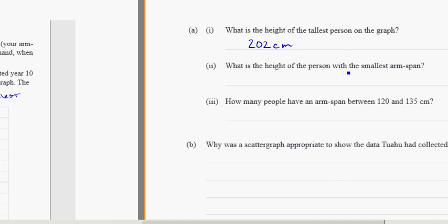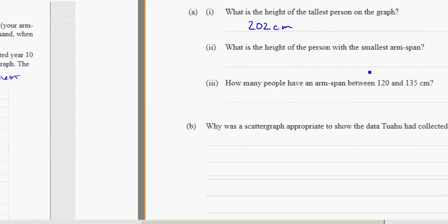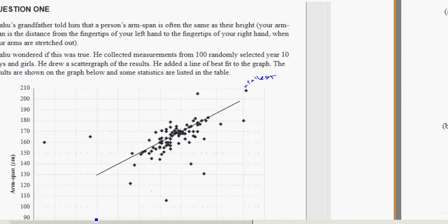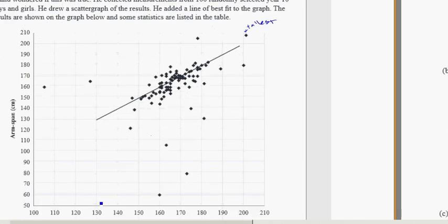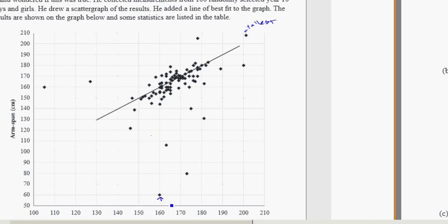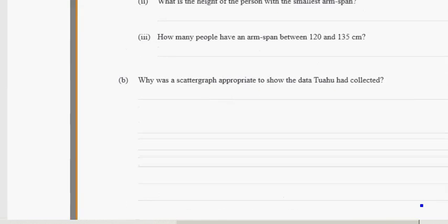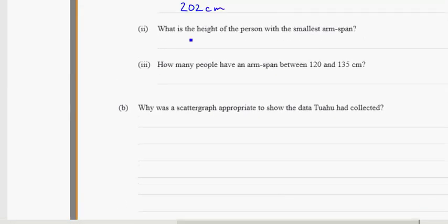What is the height of the person with the smallest arm span? In this case, we're looking for the smallest arm span first. That's the lowest down the graph this way. That's going to be this person here with the smallest arm span. They have a height of 160 centimeters.